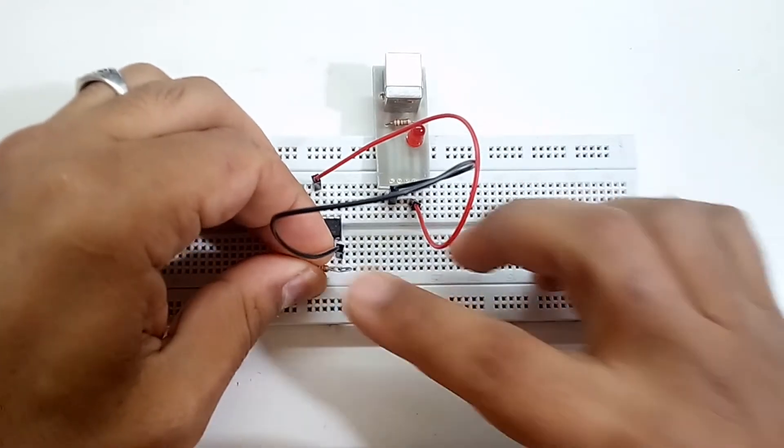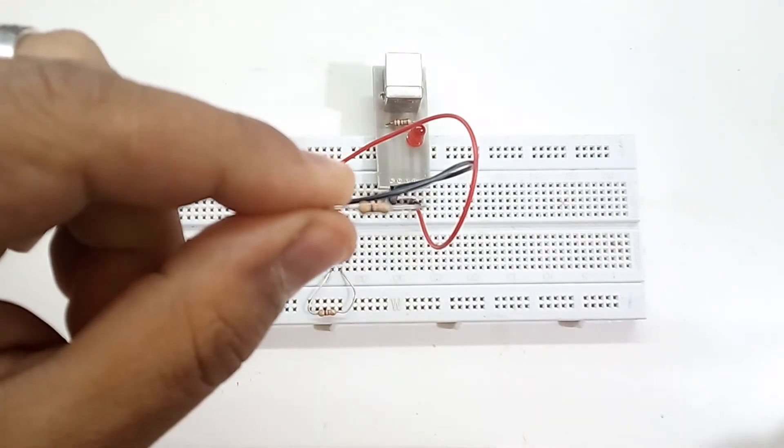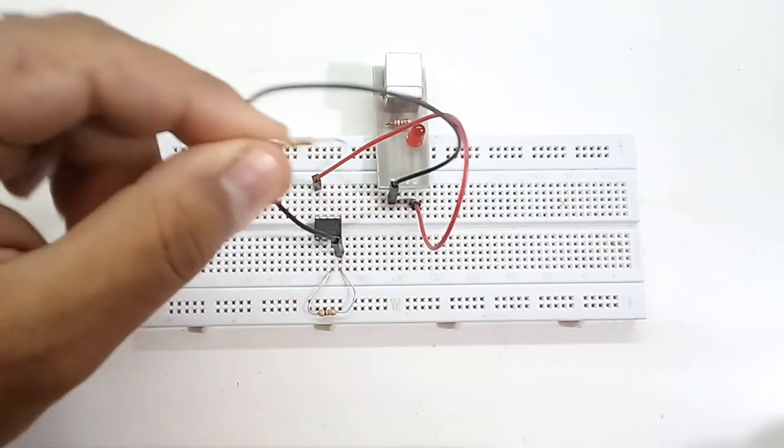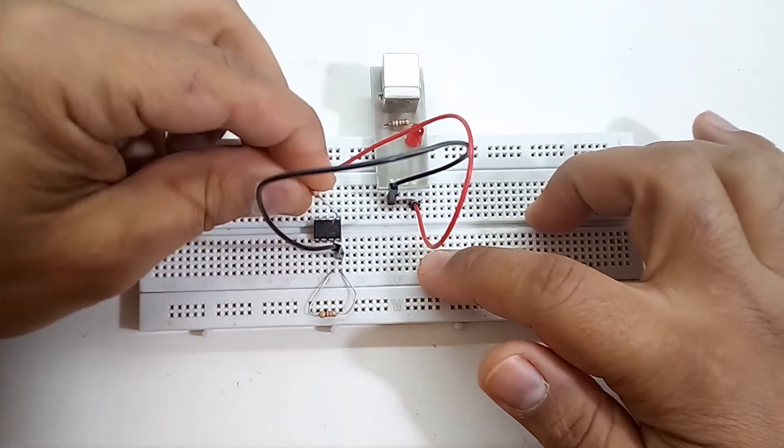We continue with another 47k resistor between pins 3 and 8 of the op amp.